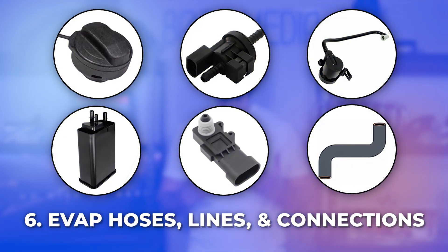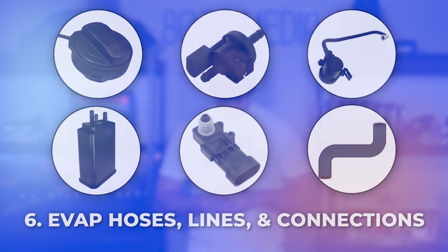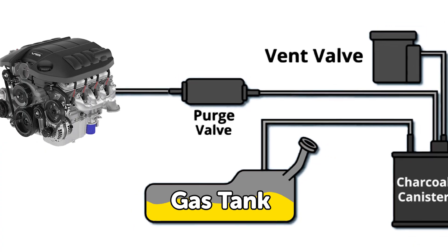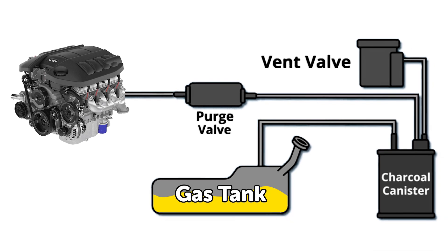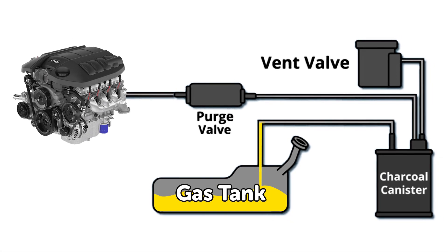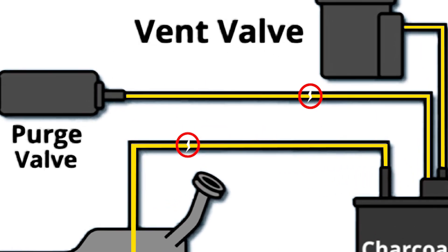The sixth component is all of the different lines, connections, and hoses throughout the EVAP system. There are a number of hoses that transfer fuel vapors from the gas tank to the engine, and those can crack and develop leaks as well.